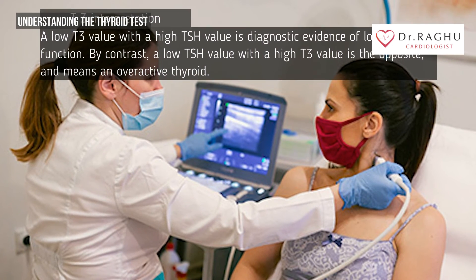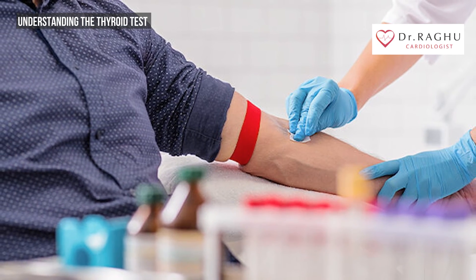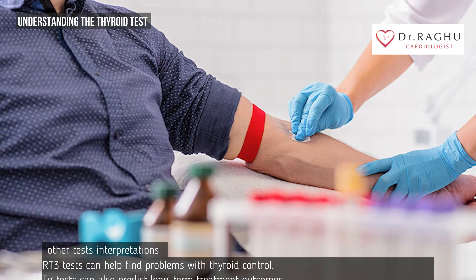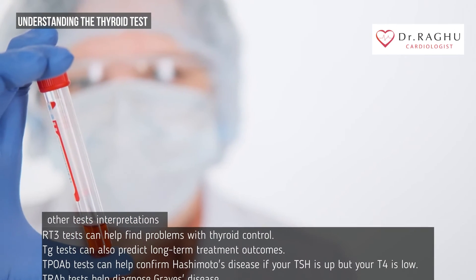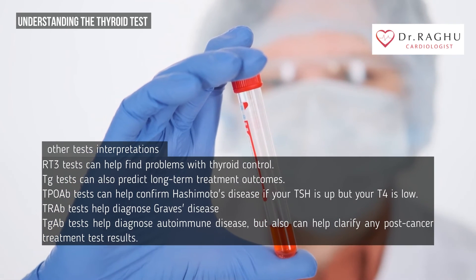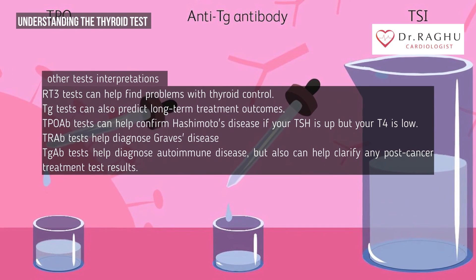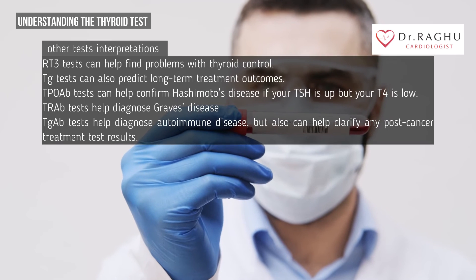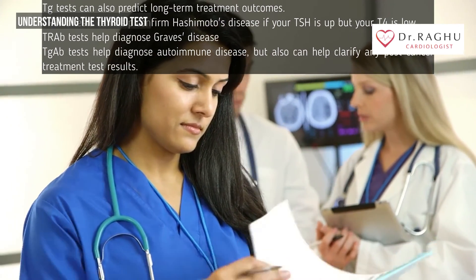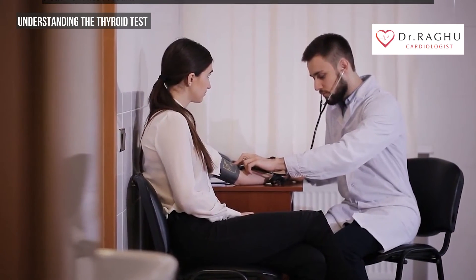Other thyroid tests may be part of a standard thyroid workup or used when needed — some have specific aims while others are used for screening or to evaluate possible causes. RT3 tests can help find problems with thyroid control. TG tests can also predict long-term treatment outcomes. TPOAB tests can help confirm Hashimoto's disease if your TSH is up but your T4 is low. TRAB tests help diagnose Graves' disease.